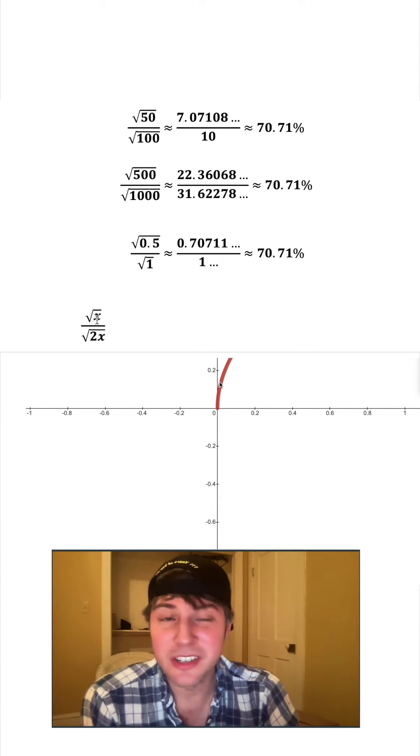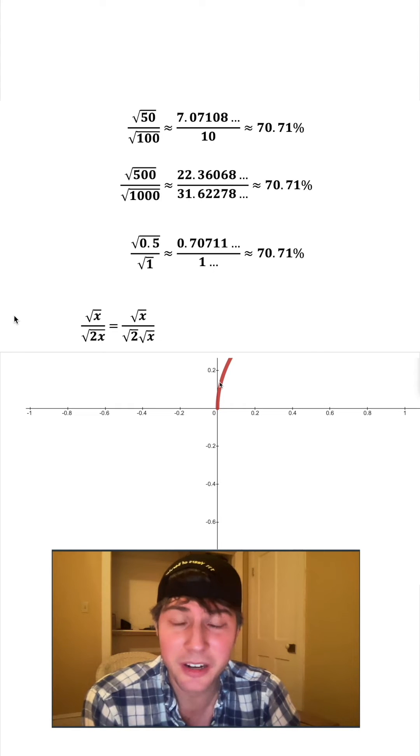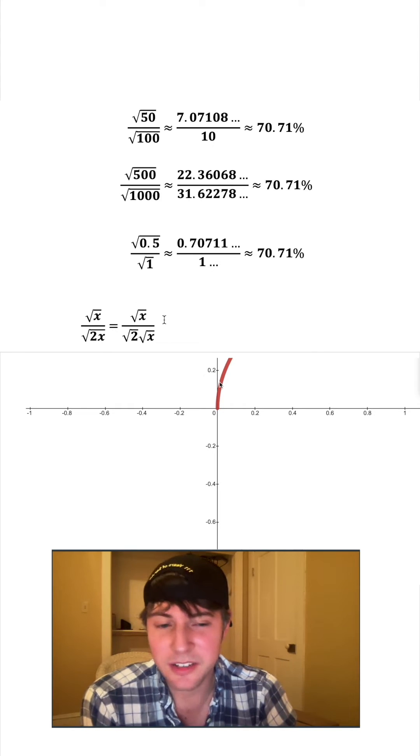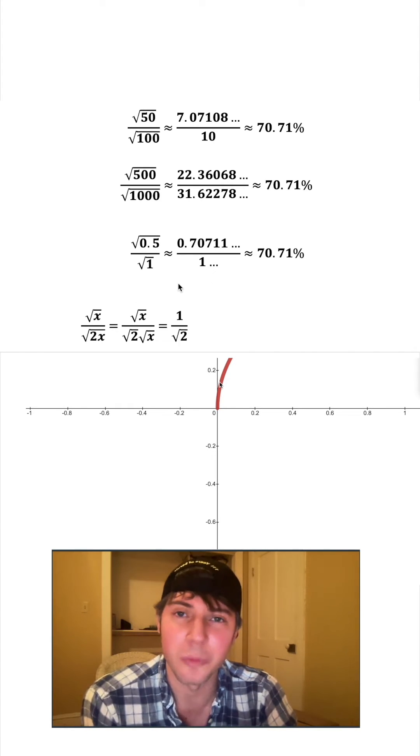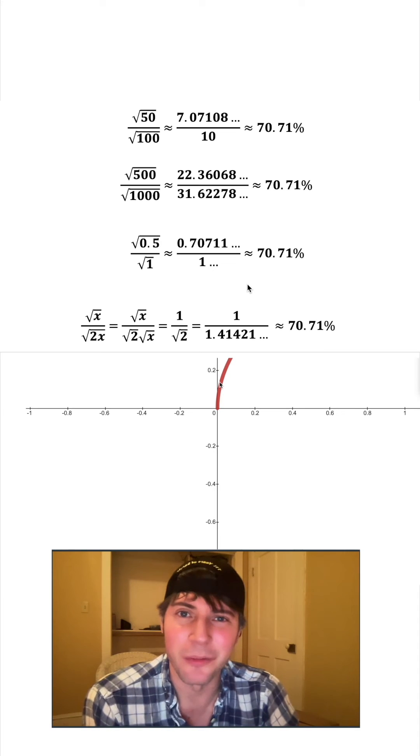Here's the math behind it. We're doing some number, any number x, over root 2x. That's the same thing as root x over root 2 times root x, because we can split them up. These root x's can cancel each other out, so we're just left with 1 over root 2. And root 2 is about 1.41421, and when we do this division, we get about 70.71 percent.